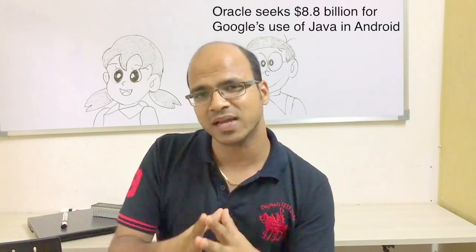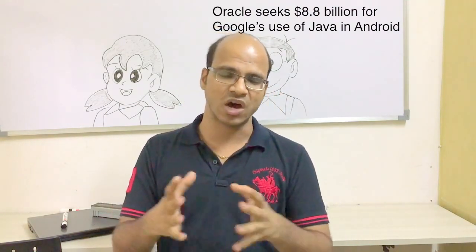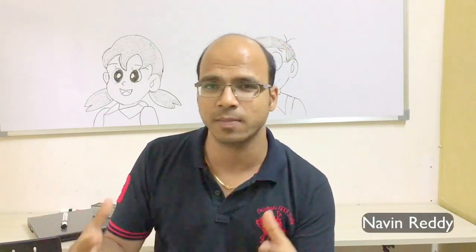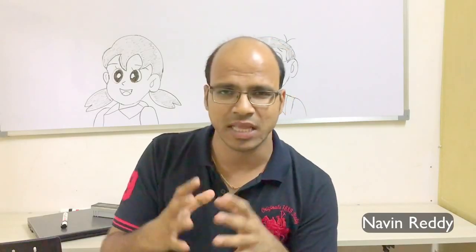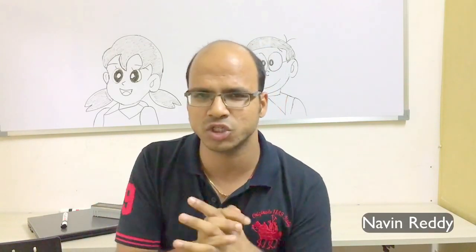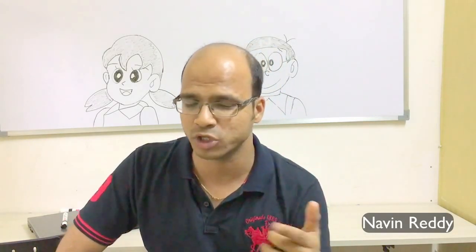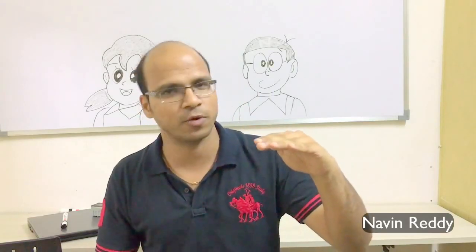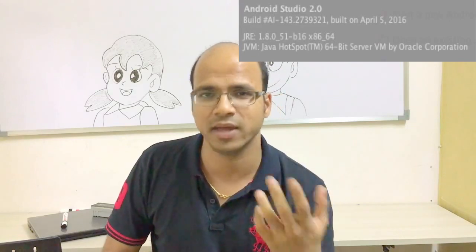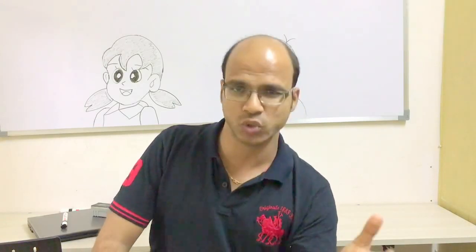The reason is that Oracle is suing Google for using the licensed version of the JDK. As you know, Java was created by Sun Microsystems, and later Oracle bought Sun — I believe in 2011. So now Java belongs to Oracle. The JDK, JVM — everything belongs to Oracle. Even in Android Studio, it states it is provided by Oracle Corporation, meaning you are using Oracle's proprietary Java.